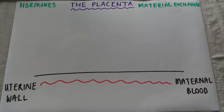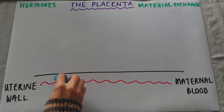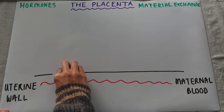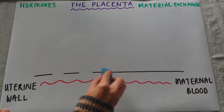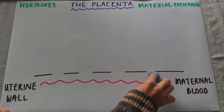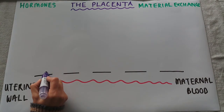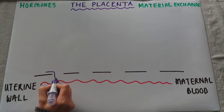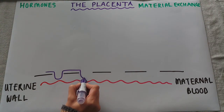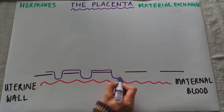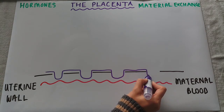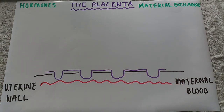When the placenta starts to grow, it puts finger-like projections called villi into the uterine wall. I'm going to draw these very simply, though they are actually a bit more complicated and tree-like. These villi show that the placenta has attached itself to the uterine wall.